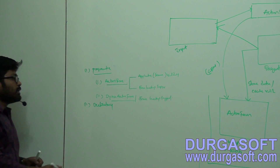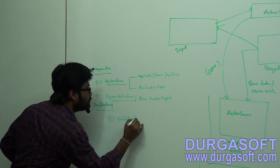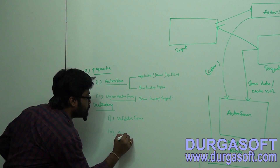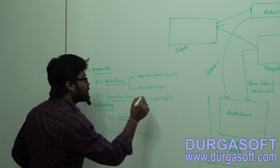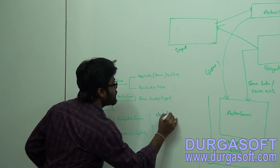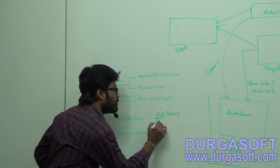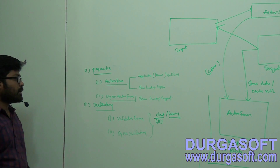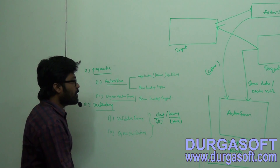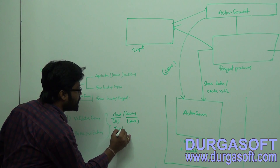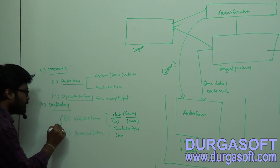Coming to the declarative approach, we have ValidatorForm and DynaValidatorForm. These declarative approach classes provide two types of validations: client-side validations and server-side validations. They automatically generate JavaScript validations as well as server-side Java validations. Both are recommended. They also provide form backup support and localization support.